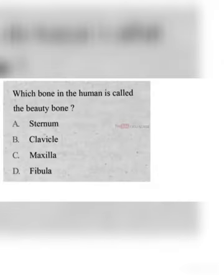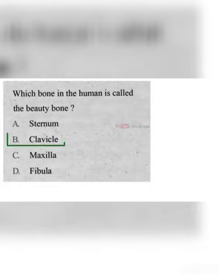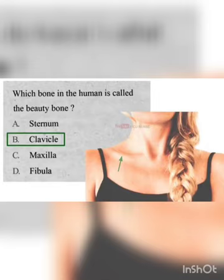Which bone is known as the beauty bone? A. Sternum, B. Clavicle, C. Maxilla, D. Fibula. The correct answer is B. Clavicle. The beauty bone is mostly just another name for your collar bone or clavicle, especially in women.